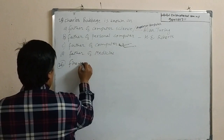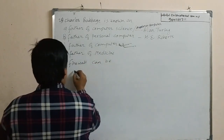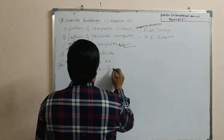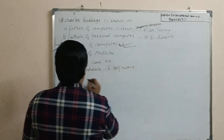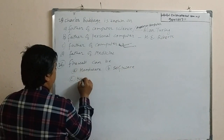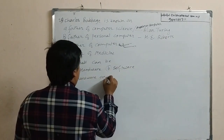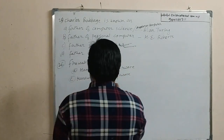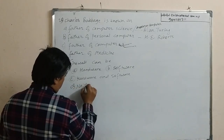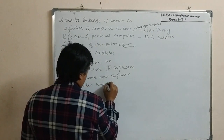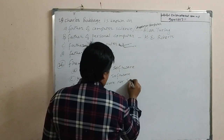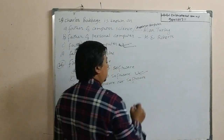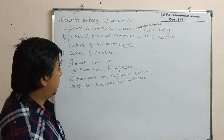Next question: a firewall can be Option A, hardware; Option B, software; Option C, hardware and software; Option D, neither hardware nor software. Firewall can be both hardware and software, so option C is the correct answer for this question.